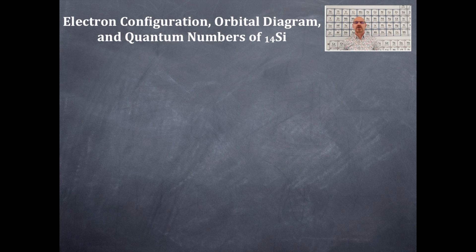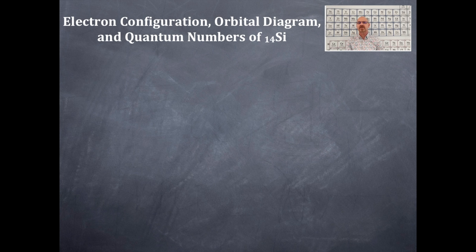Today we're doing the electron configuration, orbital box diagram, and quantum numbers — a set of four quantum numbers for silicon. Before you get started on any of these problems for this unit, you need to get yourself a periodic table.